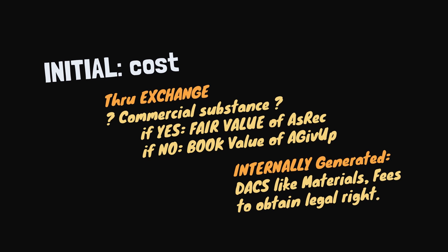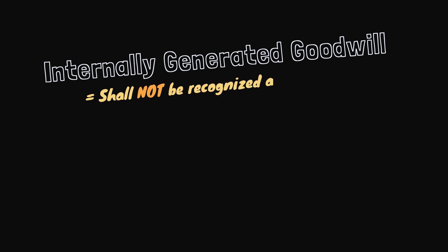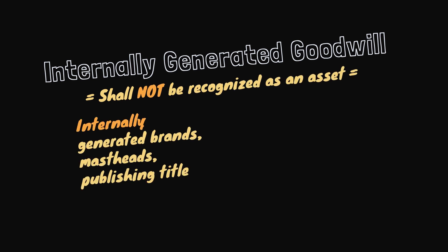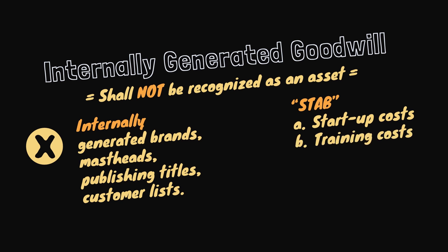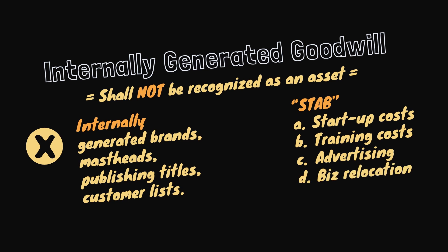For things that are internally produced, internally generated goodwill shall not be recognized as an asset. The same applies to brands, mastheads, publishing titles, and customer lists — these items cannot be identified separately from the cost of developing the business as a whole, but are viewed as components of internally generated goodwill; therefore, we expense them as incurred. Other items that are expensed include start-up costs like those incurred in organizing or pre-opening a business, inefficiencies such as initial operating losses, cost of training, selling and promotional expenses, and business reorganization and relocation costs.